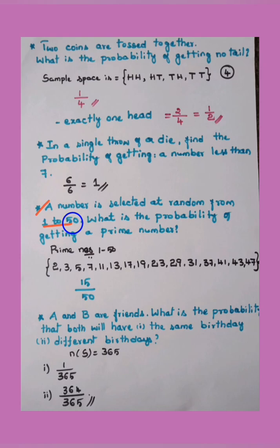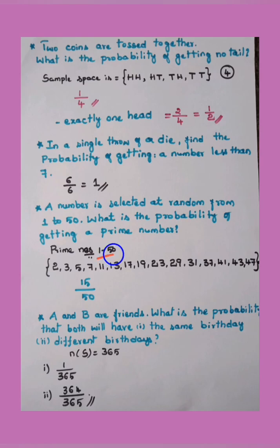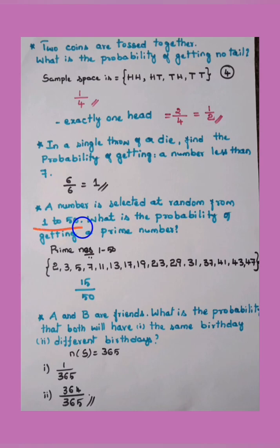A number is selected at random from one to fifty — what is the probability of getting a prime number? Prime numbers are counting numbers greater than one, divisible only by one and the number itself. The prime numbers from one to fifty are: 2, 3, 5, 7, 11, 13, 17, 19, 23, 29, 31, 37, 41, 43, 47 — fifteen numbers in total. The sample space is fifty, so the answer is fifteen by fifty.